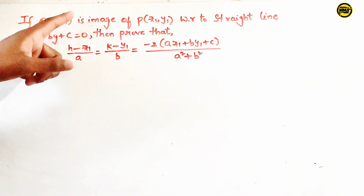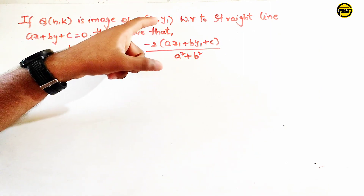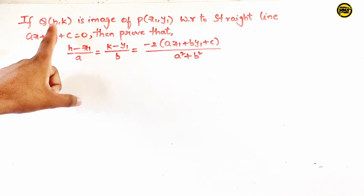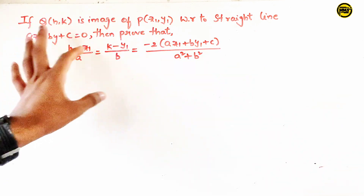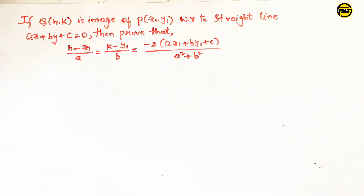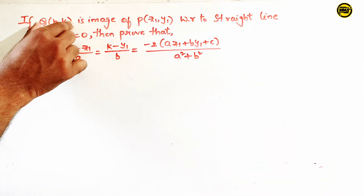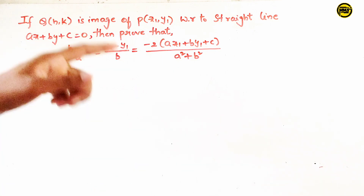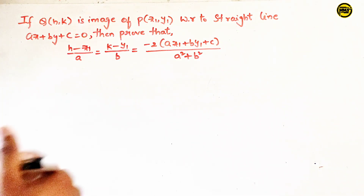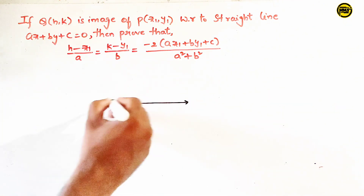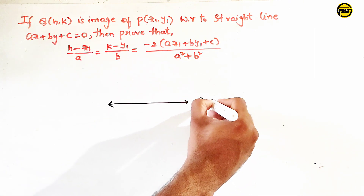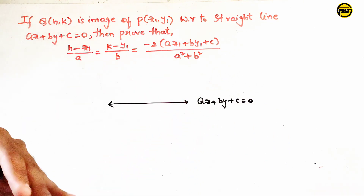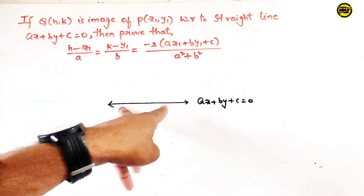If Q is the image of P with respect to the straight line ax plus by plus c equal to 0, then prove the given condition. The straight line equation is ax plus by plus c equal to 0.